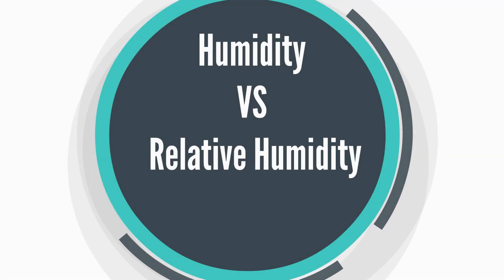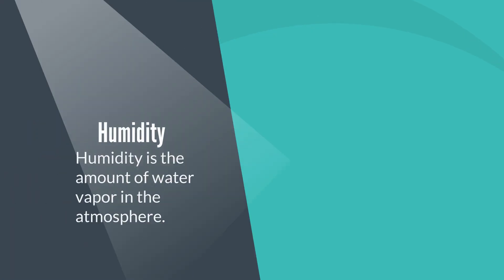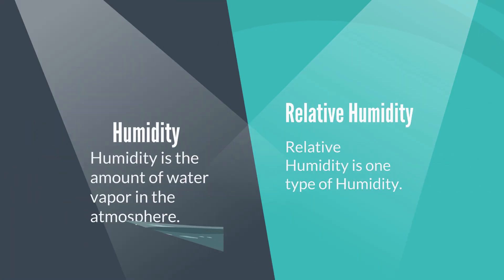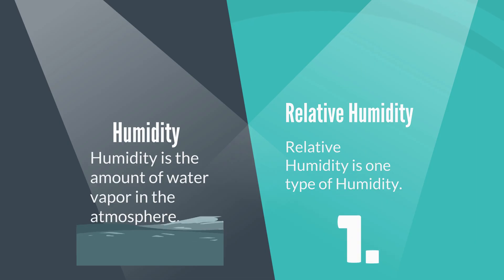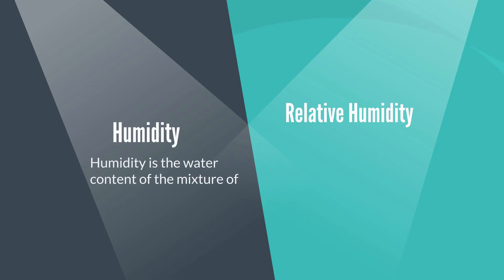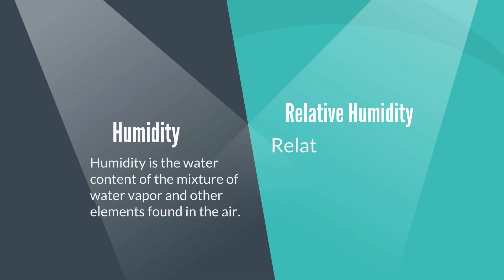Humidity versus relative humidity. Humidity is the amount of water vapor in the atmosphere. Relative humidity is one type of humidity. Humidity is the water content of the mixture of water vapor and other elements found in the air.